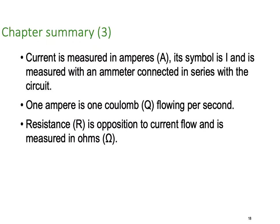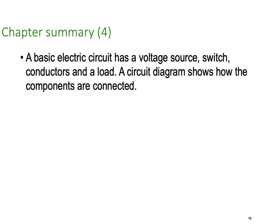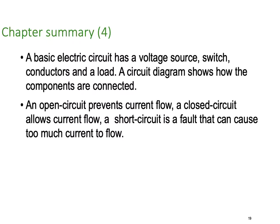Resistance, we use R. It's opposition to current flow and it's measured in ohms. We use the symbol Omega. A conductor has a low resistance. An insulator has very high resistance. A basic electric circuit has a voltage source, a switch, conductors and a load. A circuit diagram shows how the components are connected. An open circuit prevents current flow. A closed circuit allows current to flow. A short circuit is a fault that can cause too much current to flow.